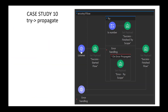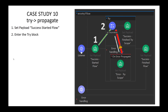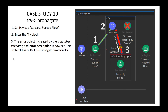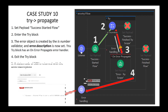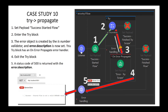Case Study 10 has a try block with OnErrorPropagate. What information will be returned to the client? In step 1, the payload is set. In step 2, we enter the try block and the IsNumber validator fails. In step 3, the error handler in the try statement catches this validation failure, but this time the error handler is an OnErrorPropagate — red in, red out. We exit the try block with an error object containing the error description. No default handler is defined for the flow, so Mule's default handler catches the exception. Status code 500 is sent to the client along with 'SUCCESS STARTEDFLOW is not a valid integer value.'